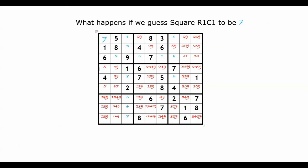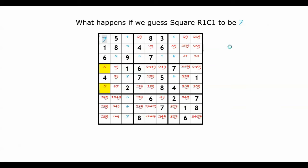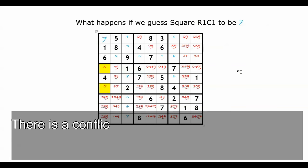We got two 5s in the first column — that's a conflict! Therefore, the first square cannot be 7, because when it is 7, we eventually reach a contradiction.